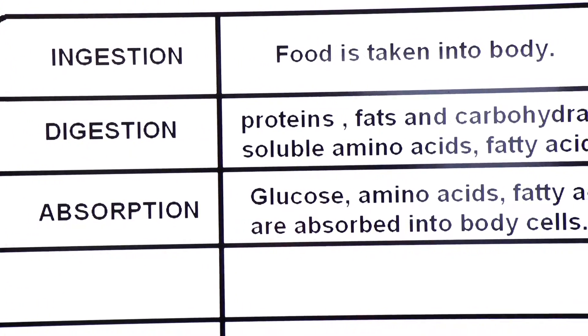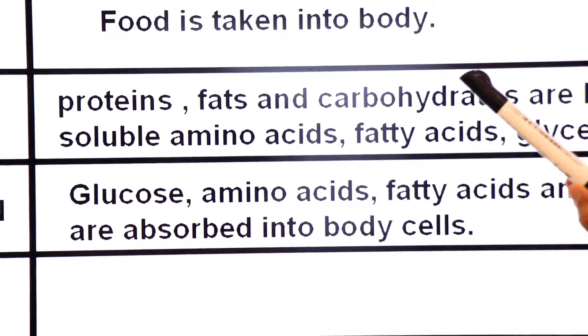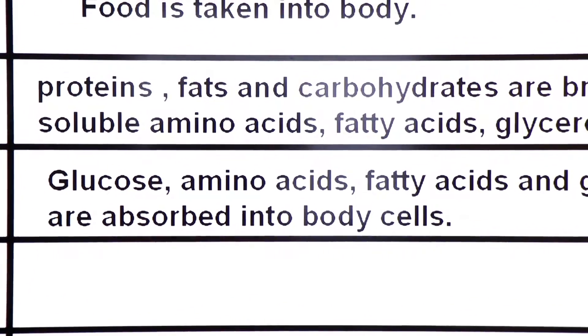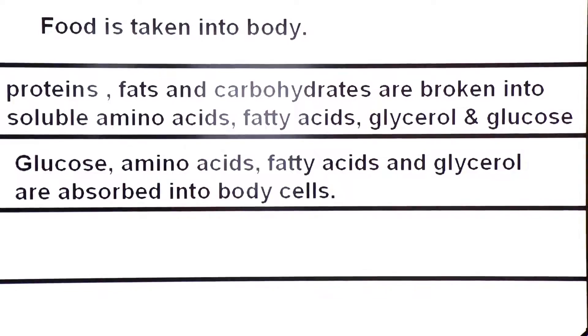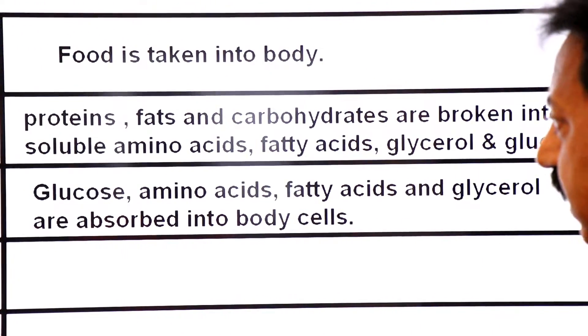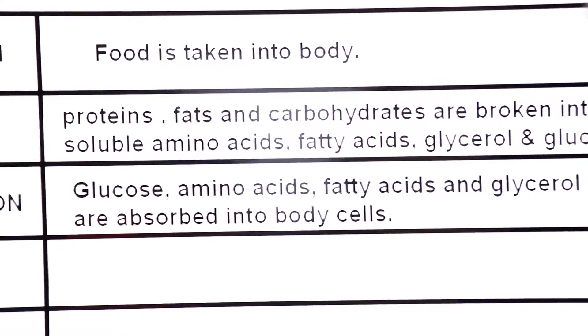What is absorption? Glucose, amino acids, fatty acids and glycerol are absorbed into the body cells by circulatory system. Amino acids, fatty acids, glucose end products are absorbed into the body cells.